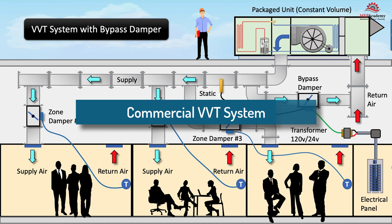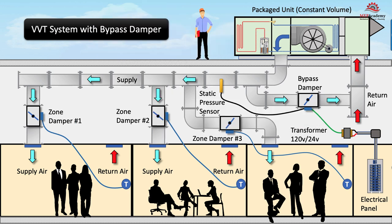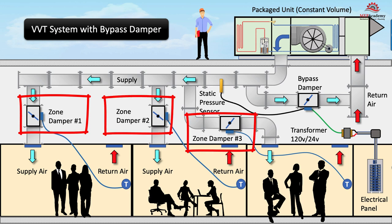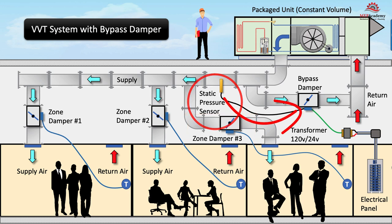In a commercial VVT system with a bypass damper, the constant volume air conditioner or heat pump serves several zones, with each zone having their own zone damper and controller. When the zone dampers start to close, a static pressure sensor picks up an increase in the duct static pressure and sends a signal to the bypass damper controller to modulate the damper open.